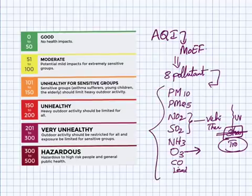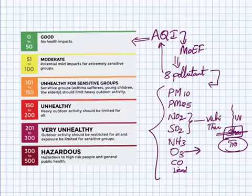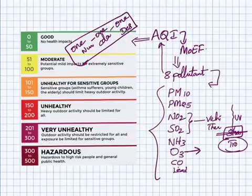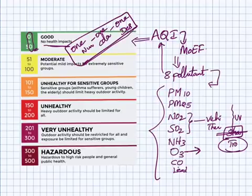These 8 are the major pollutants measured under the Air Quality Index. After measuring these pollutant levels, this index gives 6 categories of pollution levels — one number, one color, one description. This system was released to simplify the process of understanding pollution levels for the common citizen, and this AQI is released as part of Swachh Bharat Abhiyan.